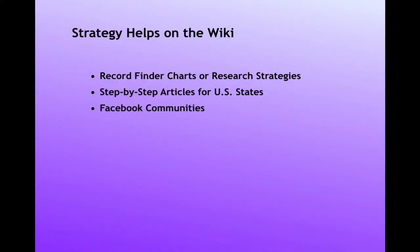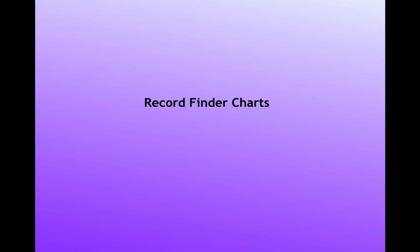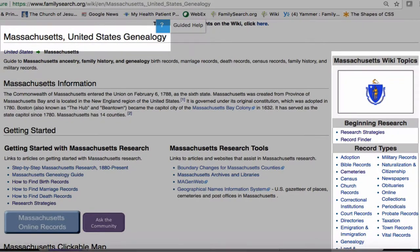For each main locality, such as a state or a country, you will find a record finder chart, and I'll show you how those work. For the states, there are step-by-step articles that have case studies you can follow. And there are Facebook communities organized by region — groups of people who are willing to help you with your genealogy. The links to record finder charts are found in the right sidebar of any country or United States state genealogy main page.